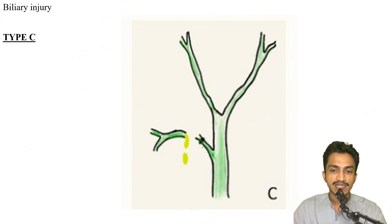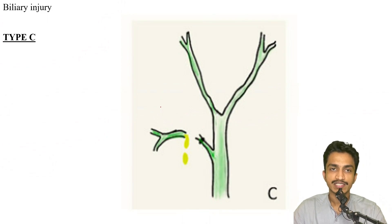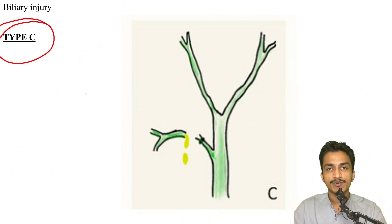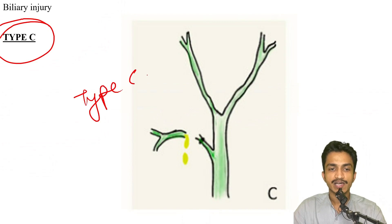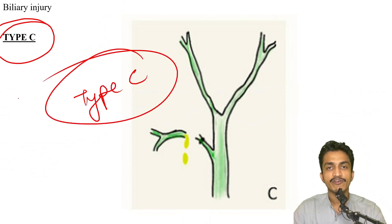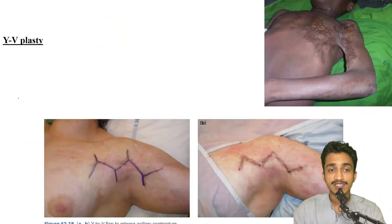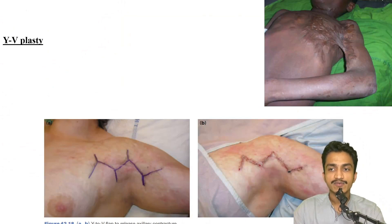Image asked to identify the type of biliary injury: cystic duct clip present but leak from the right posterior sectoral duct — this points towards Type C biliary injury. Very straightforward and easy; I hope nobody made mistakes in this.